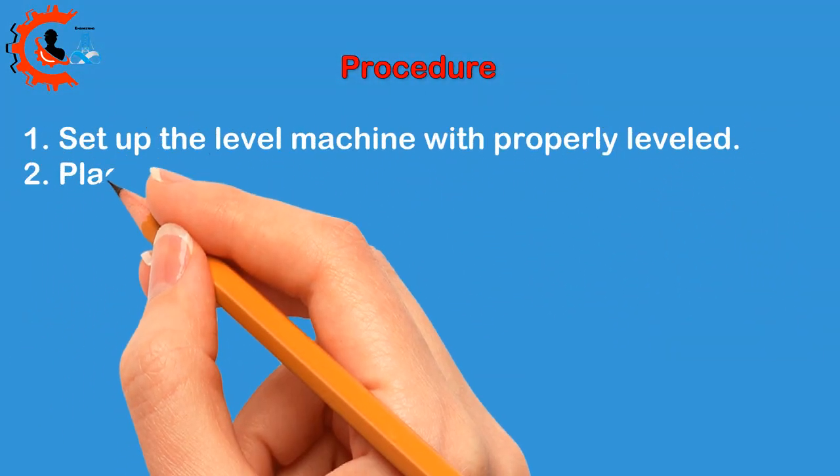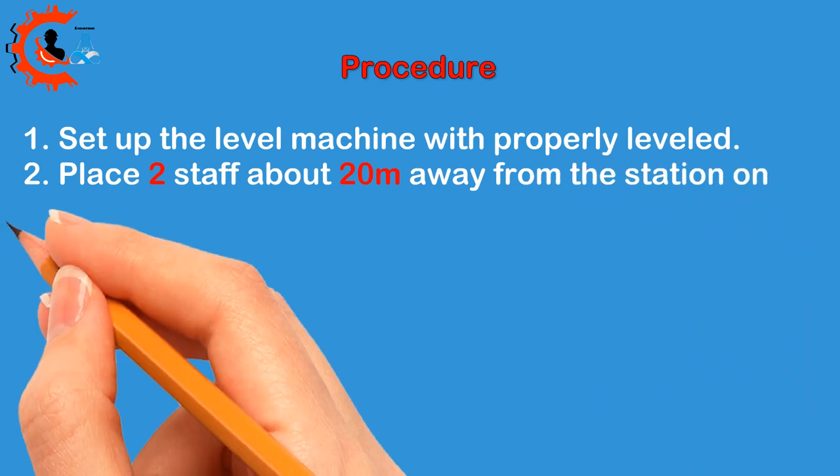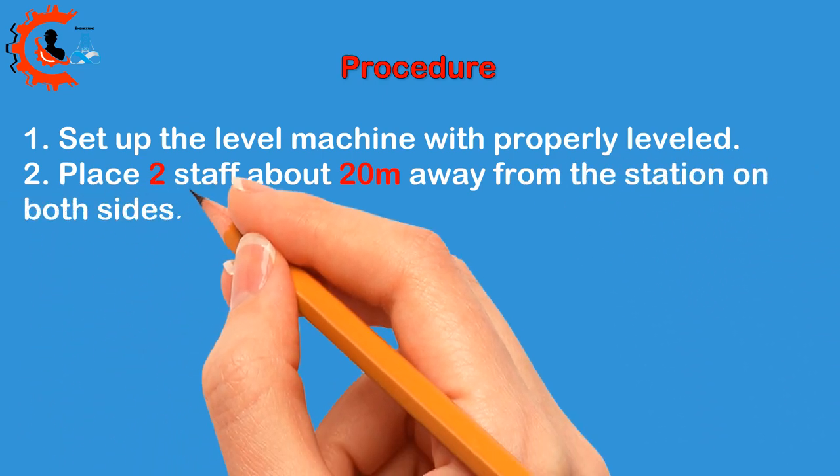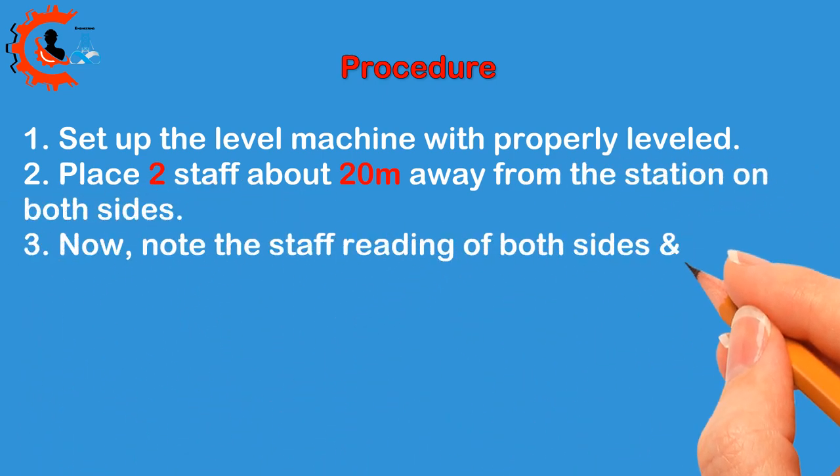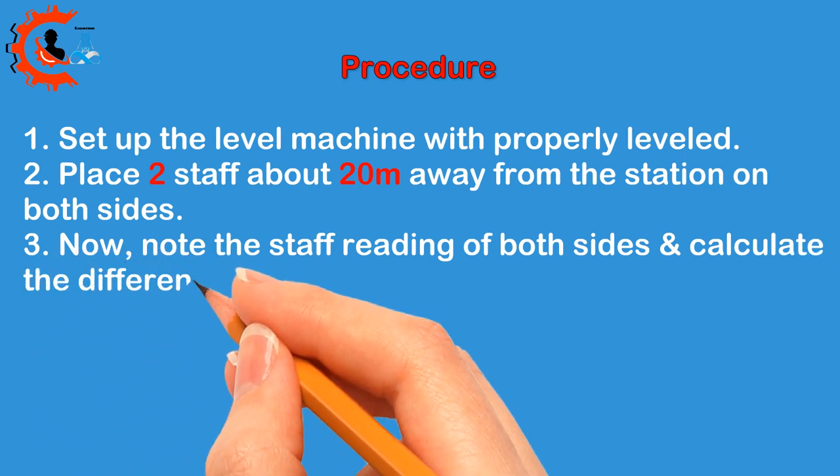Procedure: 1. Set up the level machine properly leveled. 2. Place two staff about 20 meters away from the station on both sides.